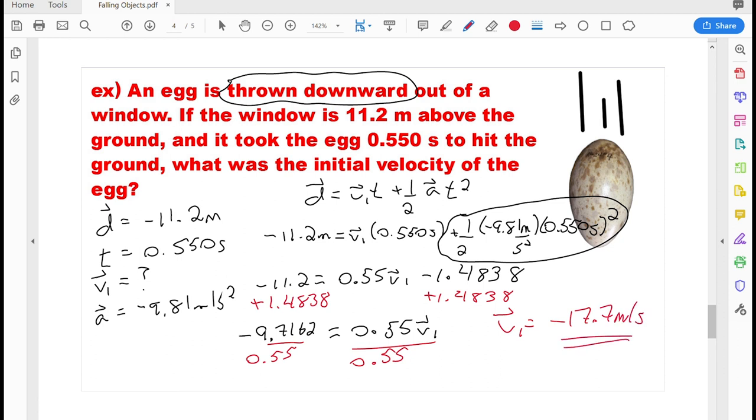And I think that makes pretty good sense that it should work out to a negative number, since I know that this egg was thrown downwards. I hope this video helps you work out some of these falling objects problems. You're going to see a few more questions like this on your Unibee review assignment. I'll see you next time.